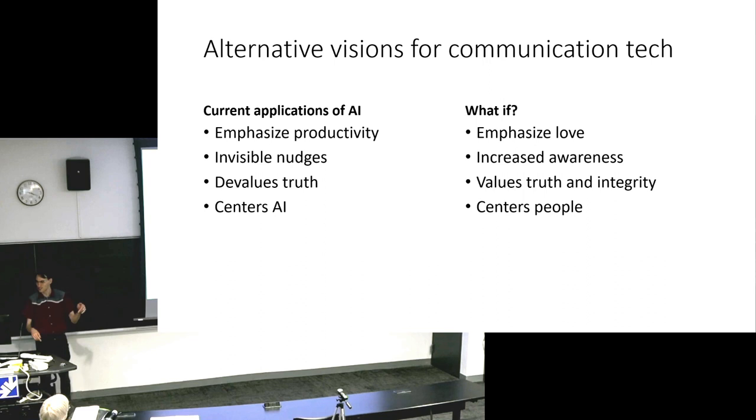So, just to come to the punchline, current applications of AI emphasize this productivity. What if we emphasize love instead? They give us invisible nudges in certain directions. What if instead they helped us be more aware of what we were communicating? They devalue truth. But what if they could help us value truth and integrity? And current approaches overall center the AI, the agent, the chatbot. What if we could center people? So, you can leave now. This is the main point.